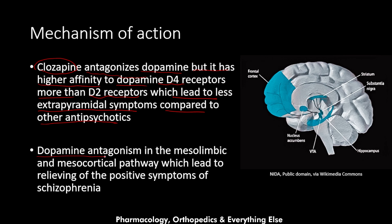Dopamine antagonism in the mesolimbic and mesocortical pathways leads to relief of the positive symptoms of schizophrenia, like hallucinations and delusions. The mesolimbic pathway connects the ventral tegmental area with the nucleus accumbens, and the mesocortical pathway connects the ventral tegmental area with the frontal lobe. Antagonism of both pathways relieves the positive symptoms of schizophrenia.